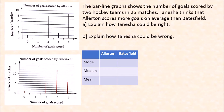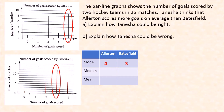Let's start with the mode — why Tanisha could be right. The mode is the most popular number. In bar-line graphs, that is indicated by the tallest bar. From Allerton, the tallest bar is at 4 goals, so the mode for Allerton is 4 goals. The tallest bar in Batesville is at 3 goals, so the mode for Batesville is 3 goals. Allerton has a higher mode — 4 compared to 3 — so that makes Tanisha could be right.